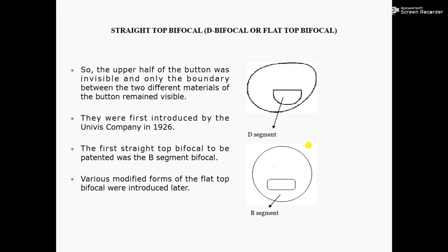So what happened? The upper half of the button was invisible. This part, the upper half of the button, was invisible and only the boundary between the two different materials of the button remained visible. It means the major lens material and the boundary of this lens material are remained visible.